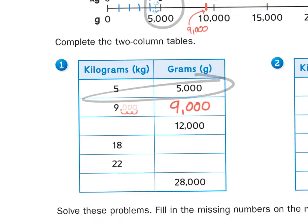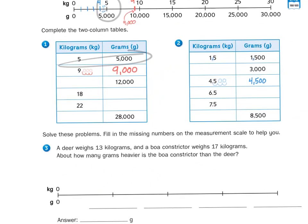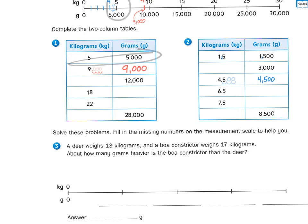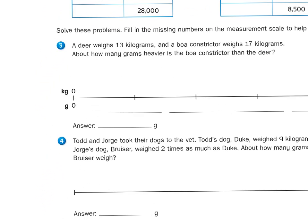These kind of conversion problems, dealing with groups of 1,000, we've done before with liters and meters and millimeters. So this shouldn't be new territory for you. Now let's take a look at this story problem for number three. A deer weighing 13 kilograms, and a boa constrictor weighs 17 kilograms. About how many grams heavier is the boa constrictor than the deer?